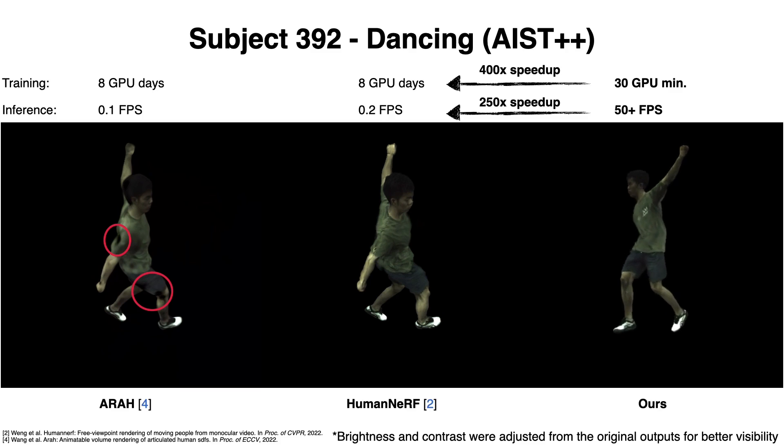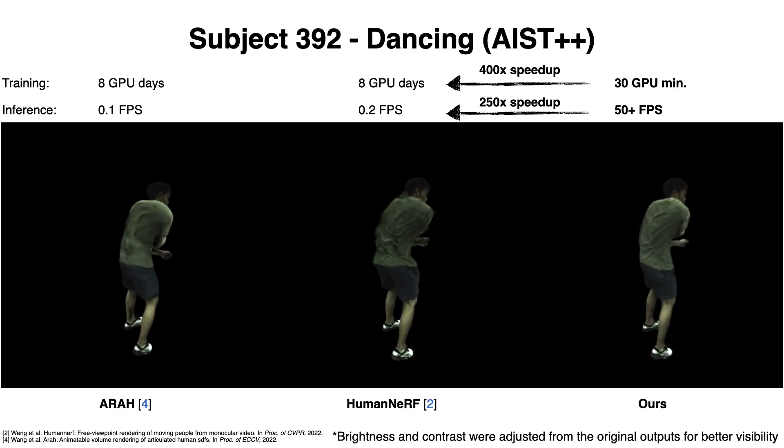ARAH is robust to unseen poses, but it lacks details in texture and can have severe misalignment artifacts.